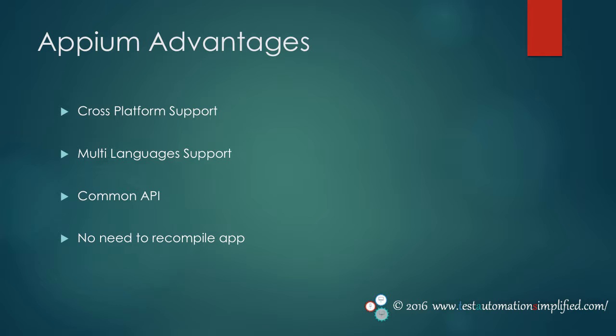So what are the other advantages of APM? We have already seen a couple of advantages of APM in previous slides, such as cross-platform support and multi-language support. One of the major advantages of APM is that it has a common API library for all the platforms it supports. The same code you write for an Android app will work for an iOS app, as long as the app implementation is the same. Another major advantage APM offers is that you don't need to compile your app to automate it, root your device, or add any libraries or framework to your app source code.